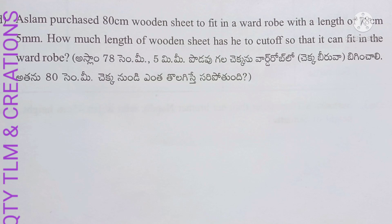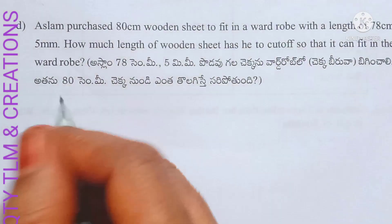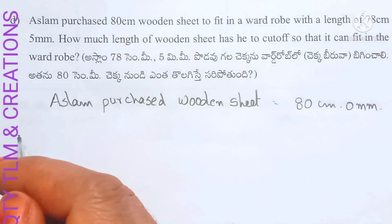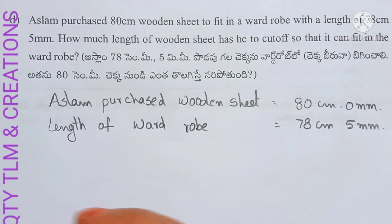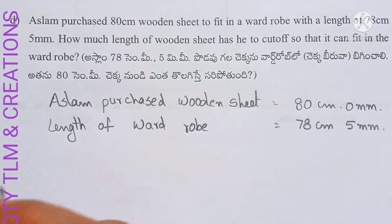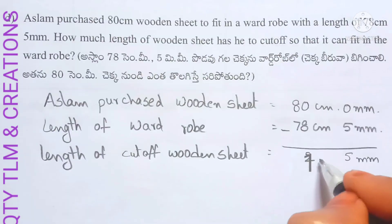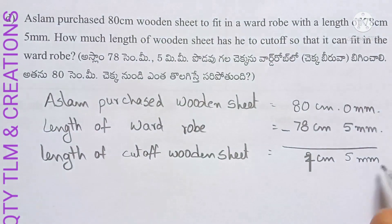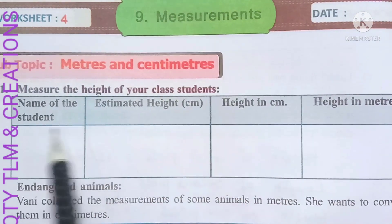Next question: Aslam purchased an 80 centimeter wooden sheet to fit in a wardrobe with length 78 centimeters 5 millimeters. How much length of wooden sheet does he need to cut off? Aslam's wooden sheet is 80 centimeters. Length of wardrobe is 78 centimeters and 5 millimeters. Subtracting gives 1 centimeter and 5 millimeters to cut off.